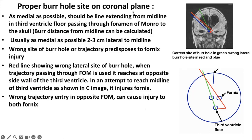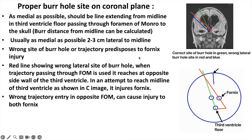There should also be a proper burr hole site on the coronal plane. The correct site and trajectory, shown as the green line, should be as medial as possible — a line extending from the midline of the third ventricle to the foramen of Monro onto the skull, typically 2 to 3 cm lateral to the midline. A wrong site predisposes to fornix injury. Taking a wrong trajectory to the opposite fornix and then trying to reach midline can injure both fornices.